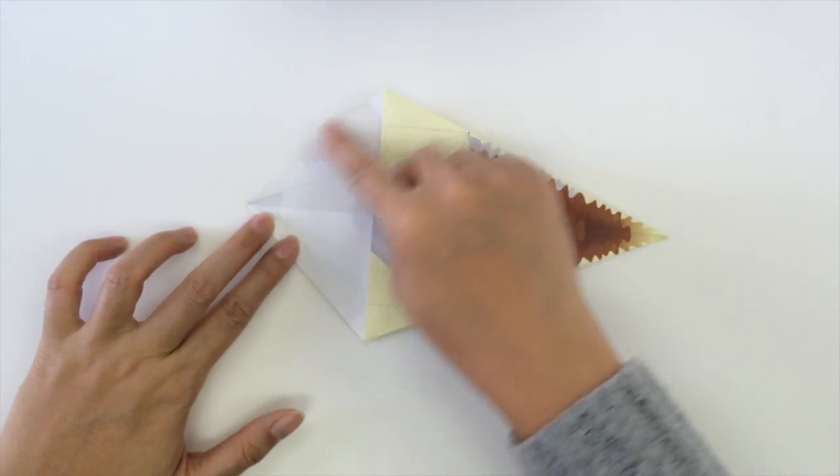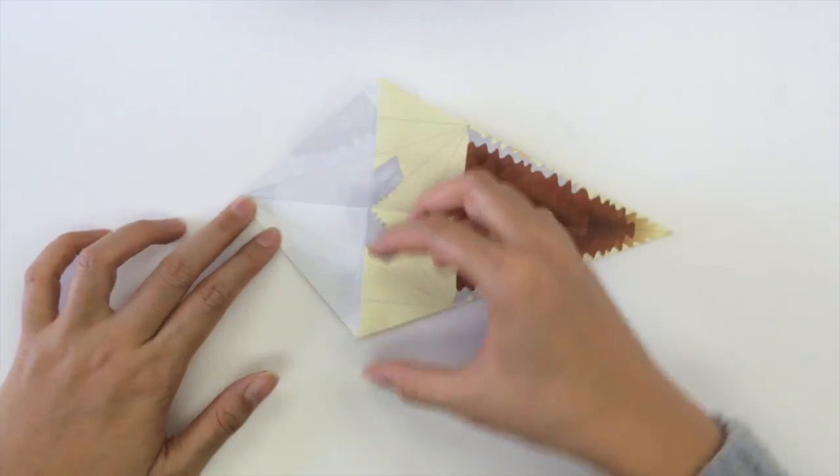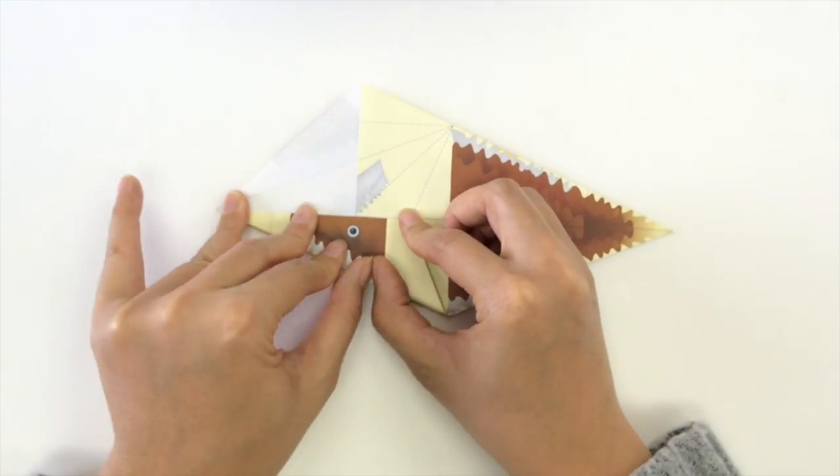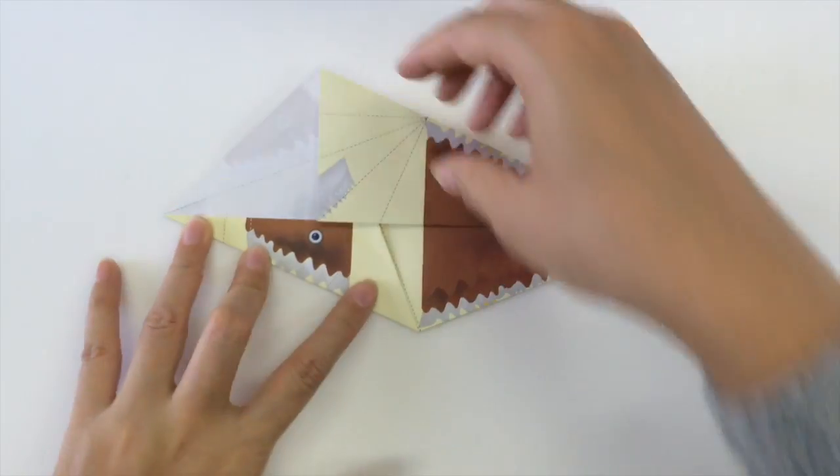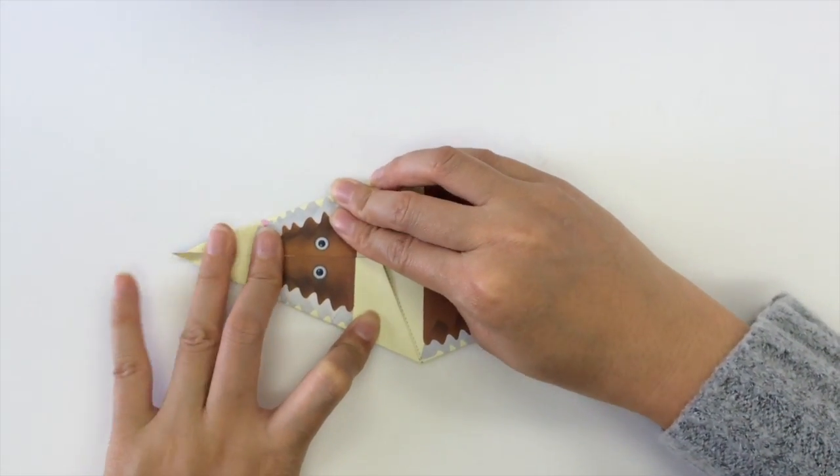Next, we're going to take these outer edges and fold them towards the middle along these dotted lines so that you get a kite shape for the whole piece. So this outer edge folds towards the middle as well.